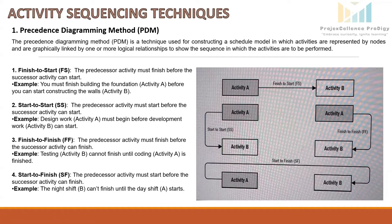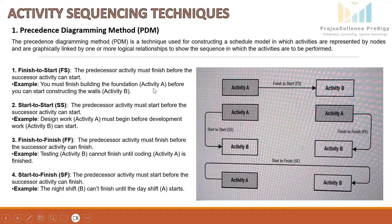The first relationship is Finish to Start, FS. This is the most common relationship — the predecessor activity must finish before the successor activity can start. For example, activity A is building the foundation and activity B is constructing the walls. We must finish activity A, the predecessor, before we start the construction of walls, activity B, which is the successor.